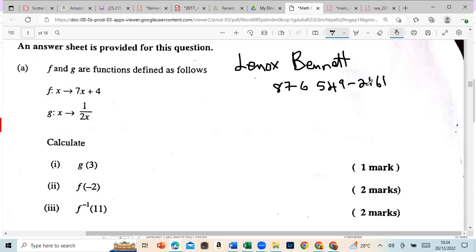All the best in your exam. Today we'll be looking at a function question. This is paper two. It says f and g are functions defined as follows: f(x) = 7x + 4 and g(x) is equal to 1 over 2x. First they say calculate g(3), so I want you guys to calculate that for me.